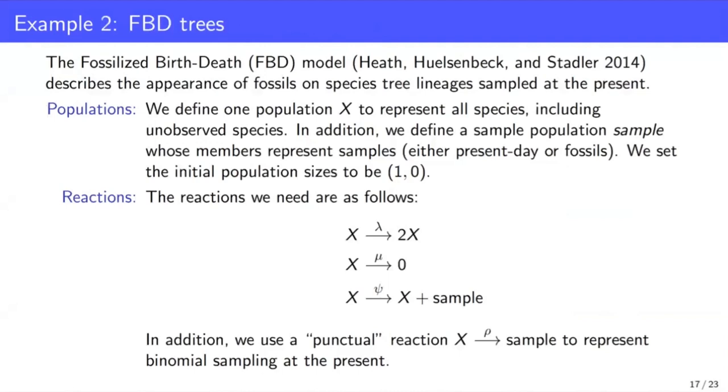Moving on to the second example. So the fossilized birth-death model is a model from Macrorevolution, and it's used to describe the appearance of fossils on species tree lineages sampled at the present. So in terms of the simplest incarnation of this model, we define one population. Here we're just going to label it X to represent all species, including unobserved species. And of course, we have to define some initial population size for this. And here we're just going to say one at some point in the past. We also have a sample population to represent samples. So they could be present-day species or fossils.